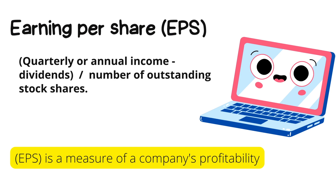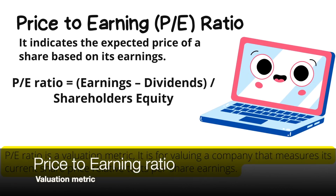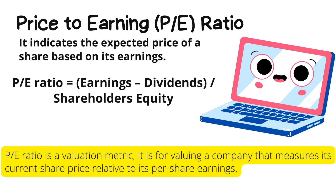Another important term derived from earnings per share is the price-to-earnings ratio. The price-to-earnings ratio is a valuation metric — it is the ratio for valuing a company that measures the current share price relative to the earnings per share. This metric helps investors assess how expensive a stock is.